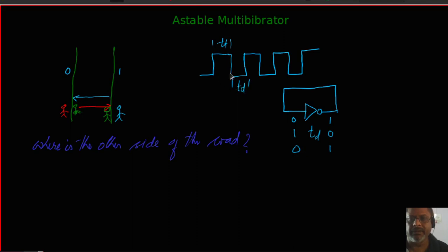A delay of td is done. So linking to this, what is happening is the delay is the time taken for the person to move from one end to the other end, that is switching from one state to another state. This is the delay the drunkard is having in moving from one end of the road to the other end.